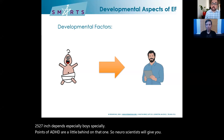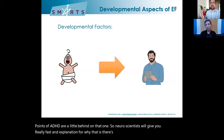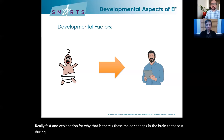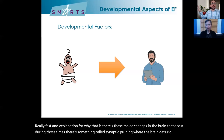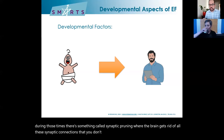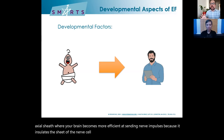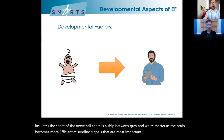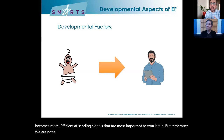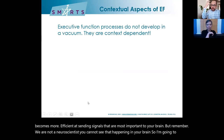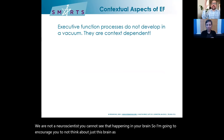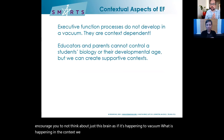But remember — we are not neuroscientists and you cannot see those brain changes happening. So I encourage you not to think about this brain as if it's happening in a vacuum. What is happening in the context? We can't control biology or developmental age, but we can control the context kids are in. In toddlerhood, now they can explore the world on their own, play make-believe, inhabit social rules. If they spill something, we ask them to clean it up; if they hurt someone, we ask them to understand the other person's perspective. The context has created all these EF opportunities that never existed before.